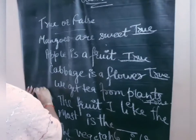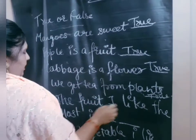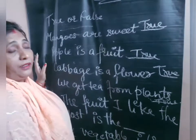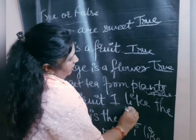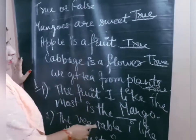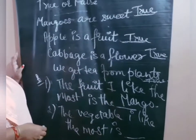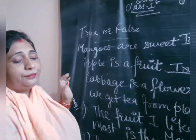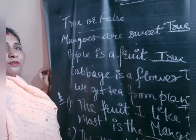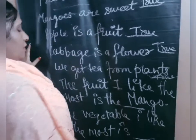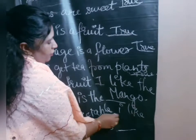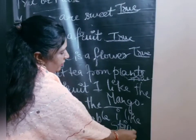Section B. The fruit I like the most — which fruit do you like? I like mango, so I am going to write mango. The vegetable I like the most — do you like spinach? I like spinach, so I am going to write spinach here.